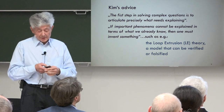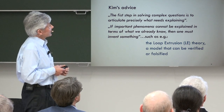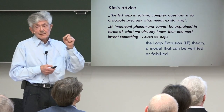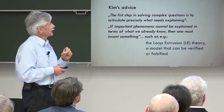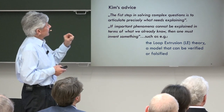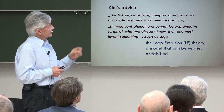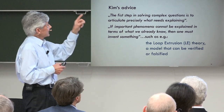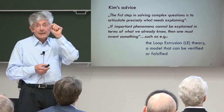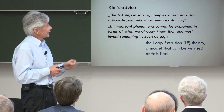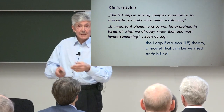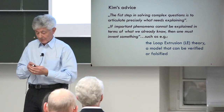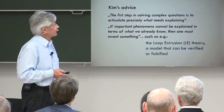Kim's advice to students and postdocs: the first step in solving complex questions is to articulate precisely what needs explaining. If important phenomena in biology cannot be explained in terms of what we already know, then one must invent something — not a fairy tale, but a working hypothesis. One of his famous models is the cohesin loop model, already textbook material, and the loop extrusion model, which we will probably hear about today.